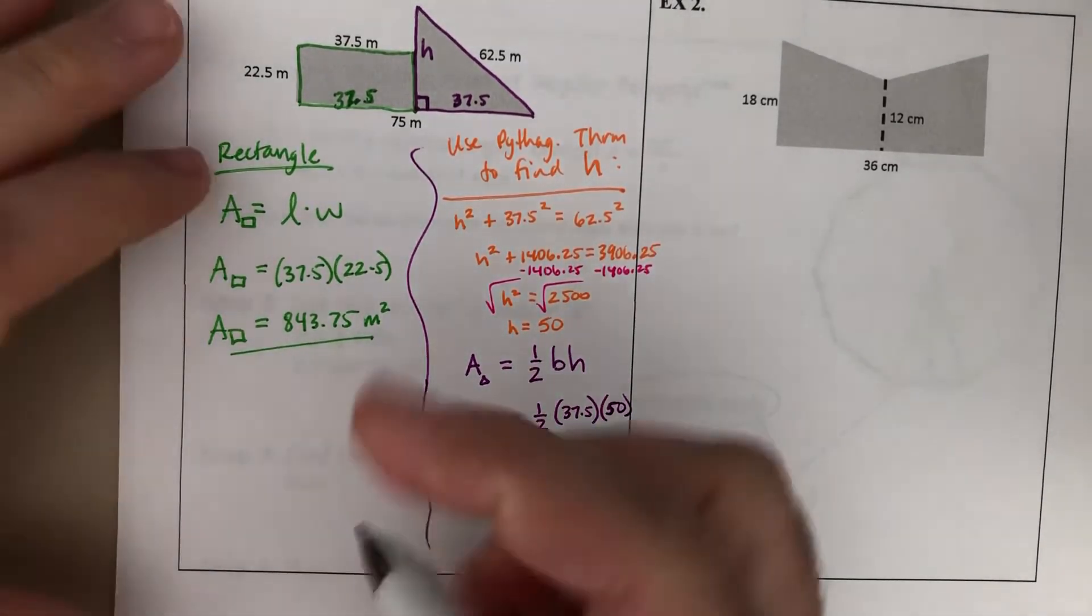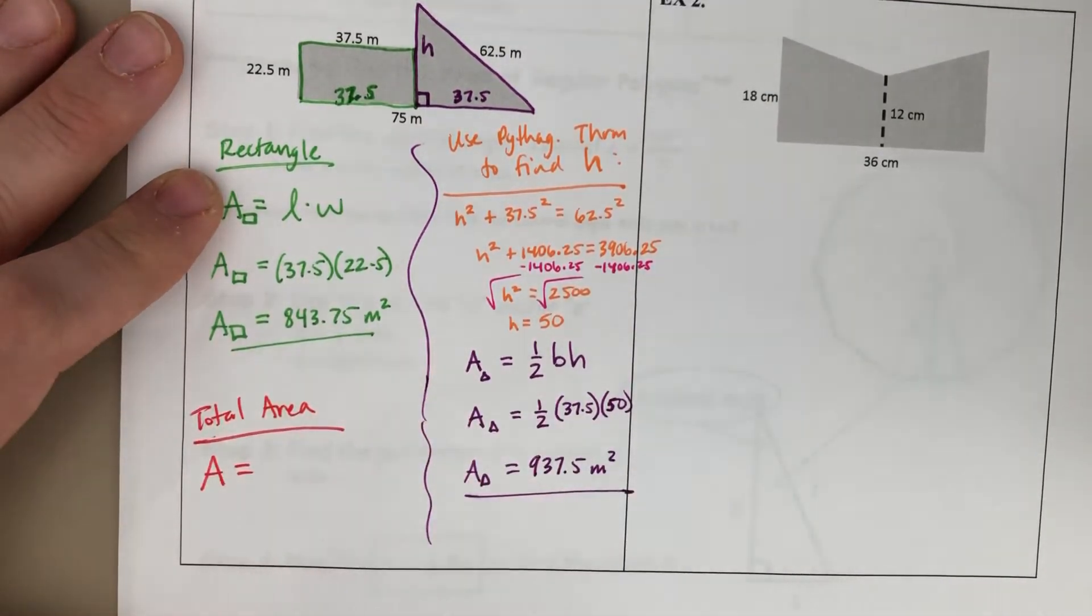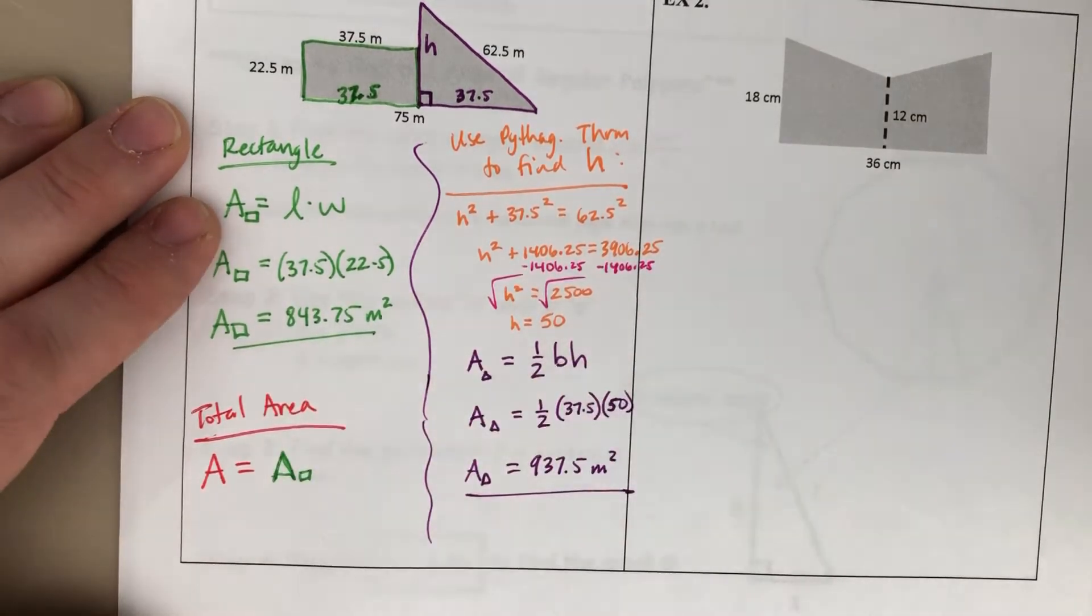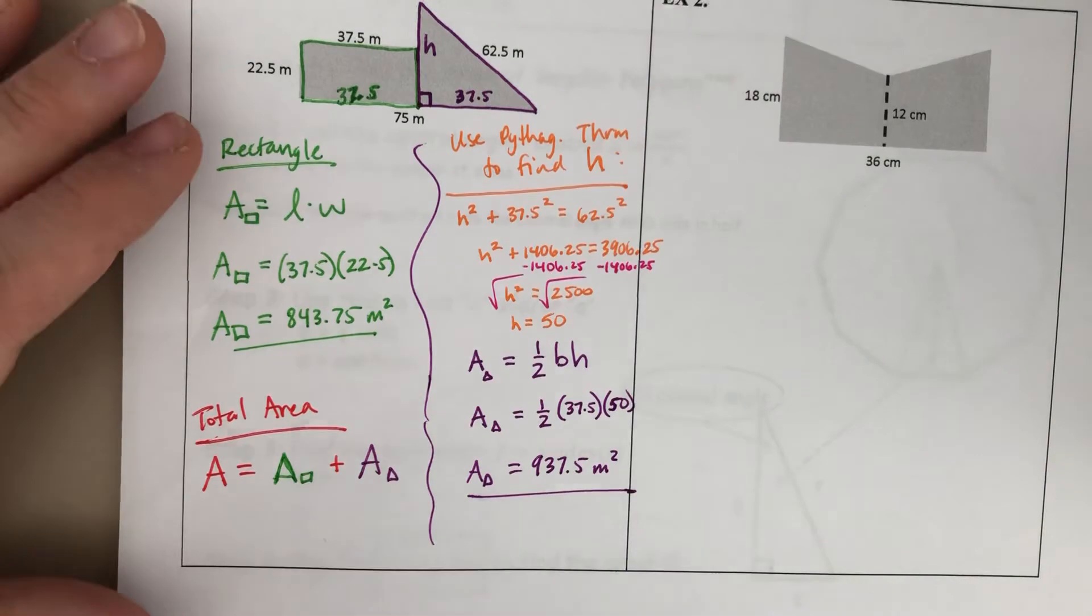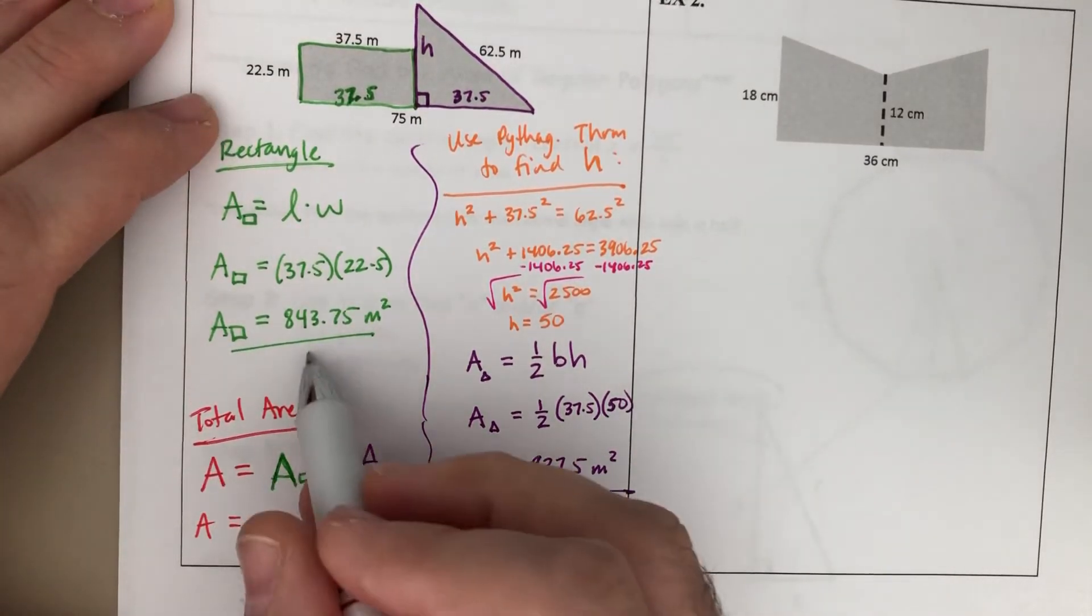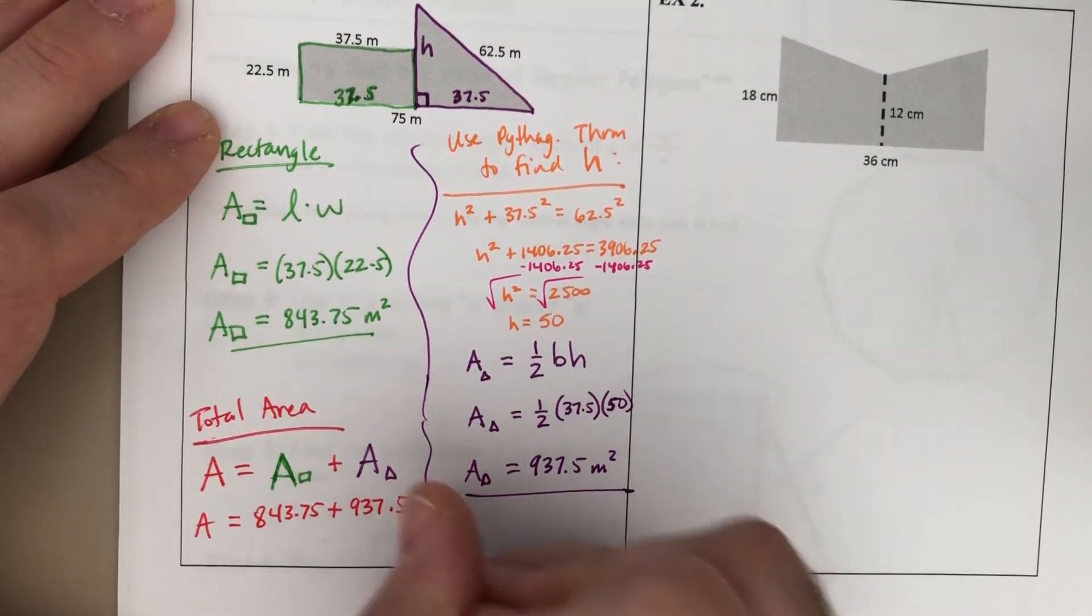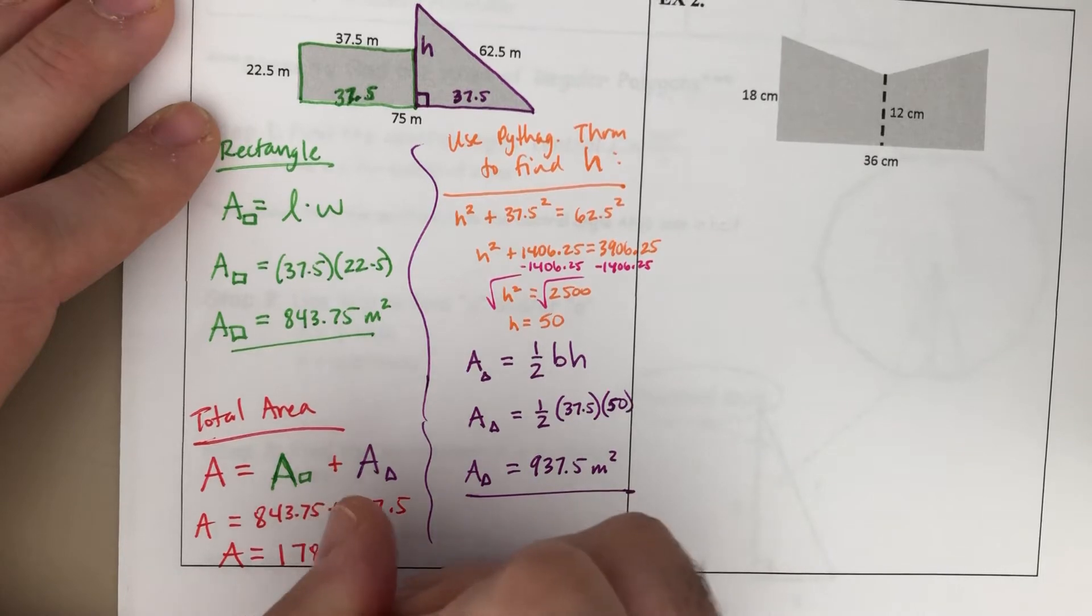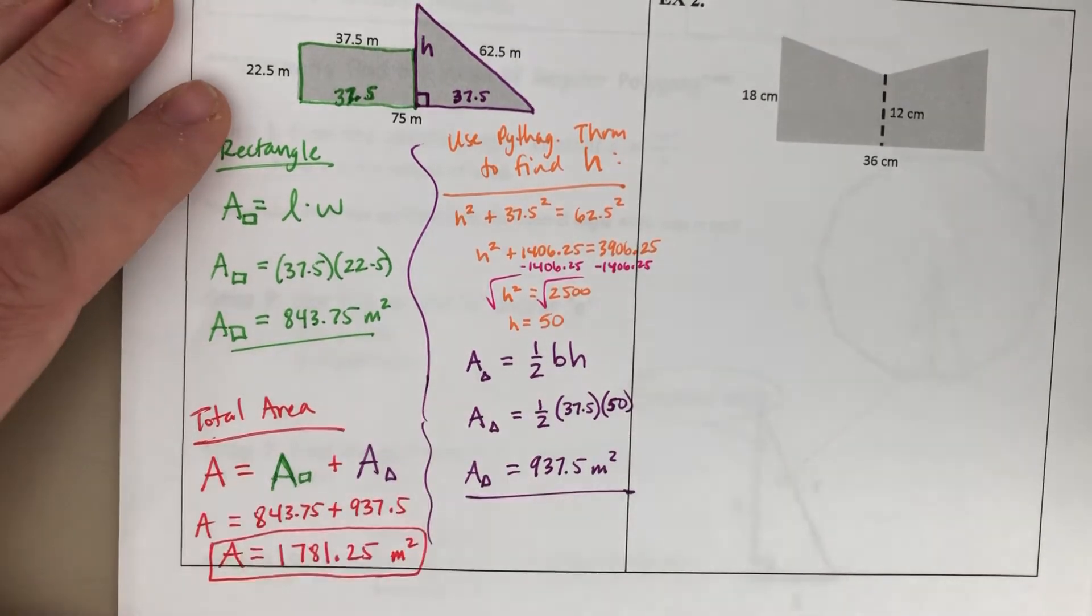Now, we're not done. The total area of this figure is what we wanted. So our total area is going to be the area of the rectangle plus the area of the triangle. And you're just going to add up the two areas. So area of the rectangle is the 843.75. Area of the triangle, 937.5. And so our total area, adding those up, 1,781.25 square meters. And that is our area of that large composite figure.